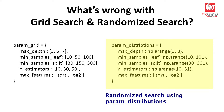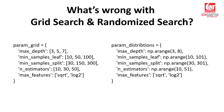How many combinations randomized search explores depends on the number of iterations chosen. If we choose just 10 iterations, it will try only 10 possible combinations. This is faster compared to grid search, but it's quite possible you may not get the best results because you've randomly sampled only a few combinations and haven't explored the entire set of possibilities.